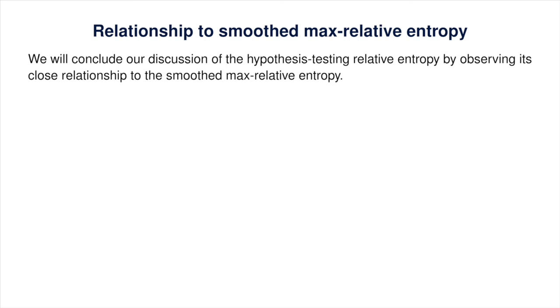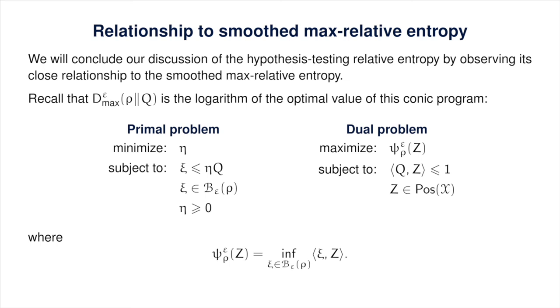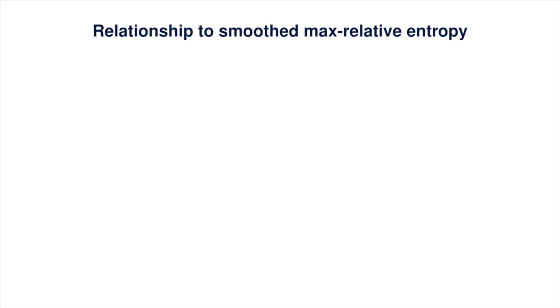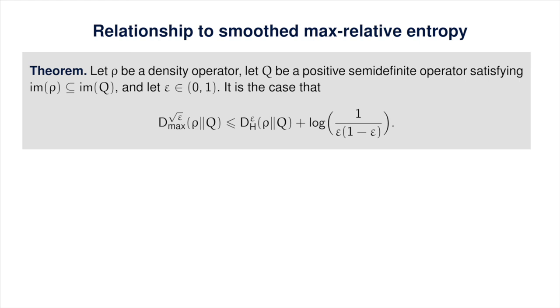The last thing we'll do is relate the hypothesis testing relative entropy to the smoothed max relative entropy. They aren't the same thing, but they have a close relationship. We'll prove two theorems: one establishing an upper bound on the smoothed max relative entropy in terms of the hypothesis testing relative entropy, and the second doing the reverse. We'll start with the dual problem for the smoothed max relative entropy, assuming the image of rho is contained in the image of q and epsilon is in the open interval from 0 to 1.